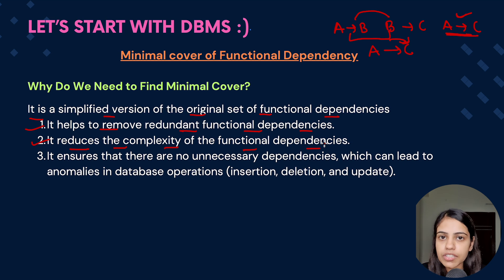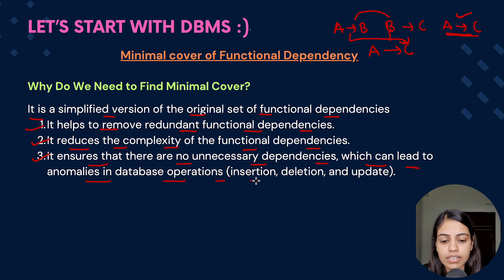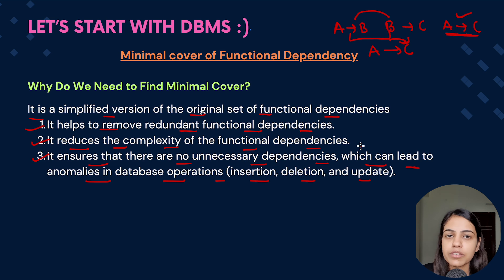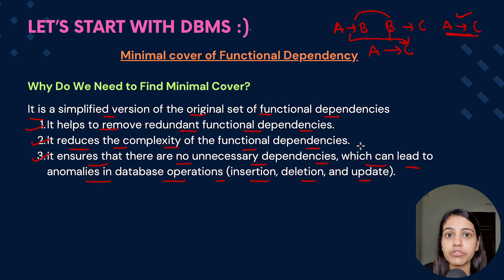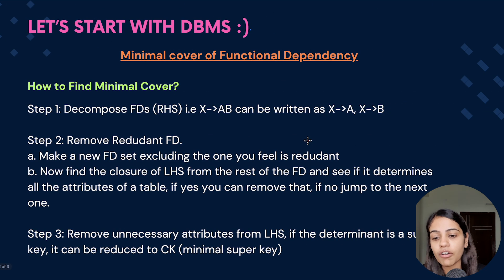The second point: it reduces the complexity of functional dependencies. The fewer the functional dependencies, the lower the complexity. Third, it ensures that there are no unnecessary dependencies which can lead to anomalies in database operations such as insertion, deletion, and updation. If A is a candidate key or super key, there are very few anomalies, but if A is a non-prime attribute, many anomalies are introduced in the database.